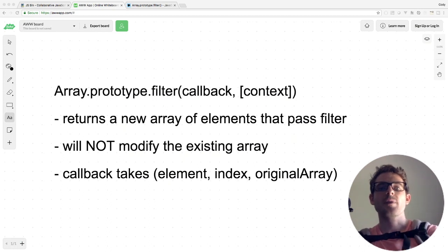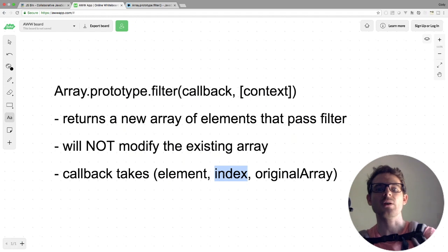So again, this returns a new array of elements that pass the filter, which is when the callback returns true. It will not modify the original array, and the callback takes some additional arguments if you wanted, for instance, the index of what element you're looking at, or if you wanted a reference to the original array for whatever reason.